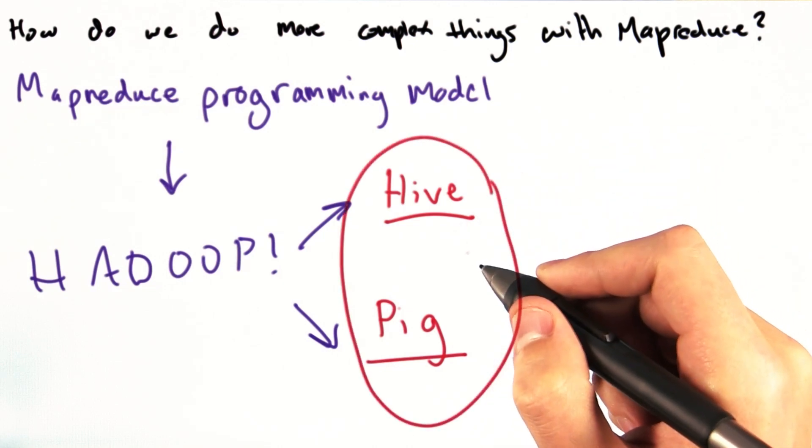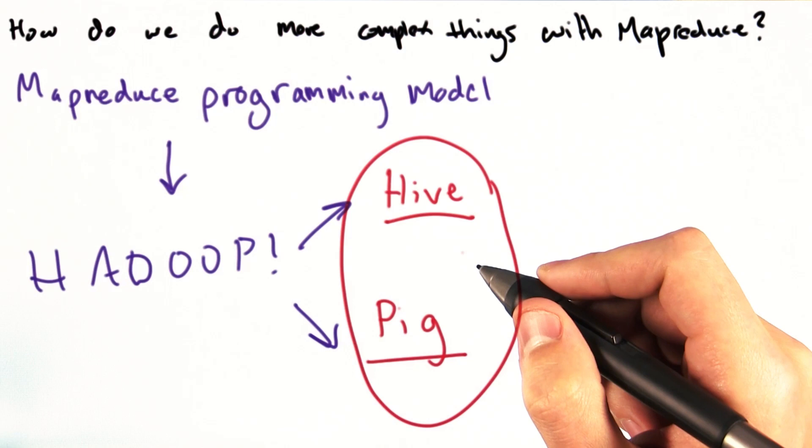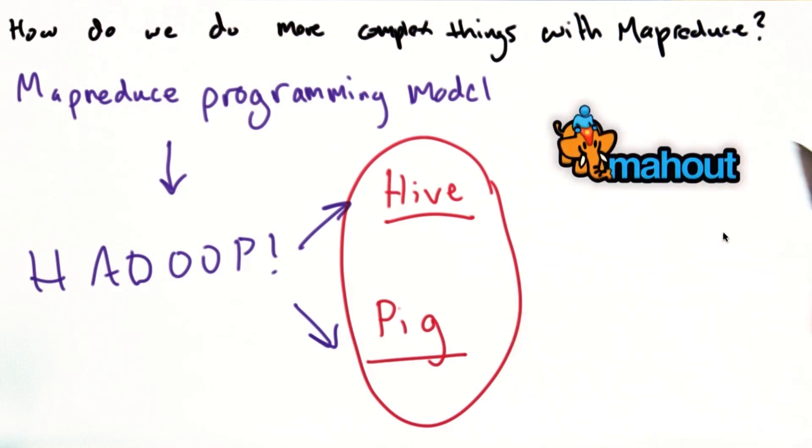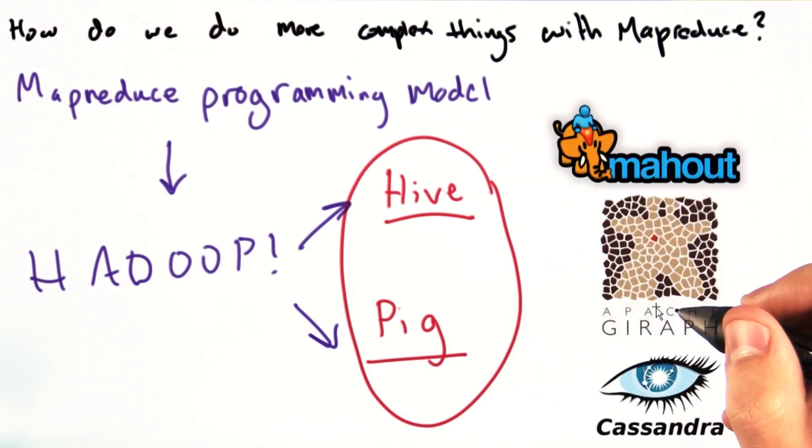Hive and Pig are two of the most common Hadoop based products, but there are a bunch of them out there. For example, Mahoot for machine learning, Giraffe for graph analysis, and Cassandra, a hybrid of a key value and a column oriented database.